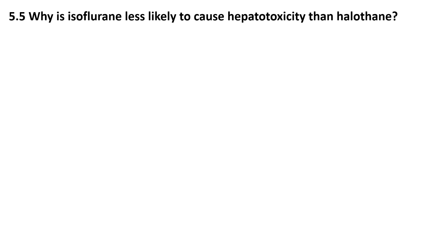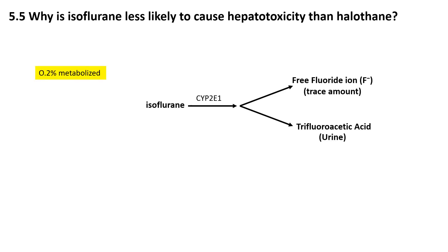Why is isoflurane less likely to cause hepatotoxicity than halothane? Isoflurane undergoes minimal metabolism, with approximately 0.2% of the administered dose being metabolized in the liver. The primary enzyme responsible for its metabolism is cytochrome P450, which facilitates the oxidative breakdown of isoflurane. This oxidation leads to the formation of trifluoroacetic acid as the main metabolite. Unlike halothane, isoflurane does not significantly produce trifluoroacetyl chloride, a reactive intermediate associated with immune-mediated liver injury.